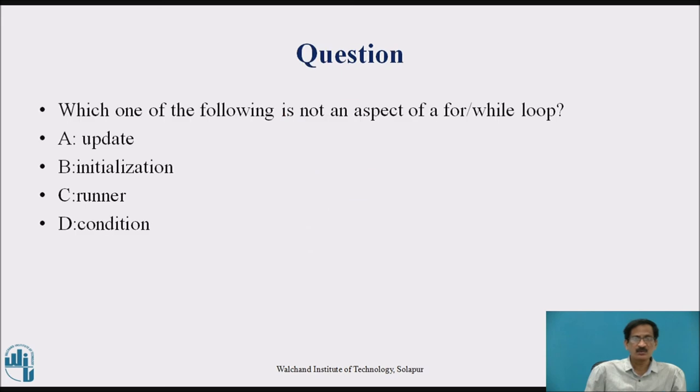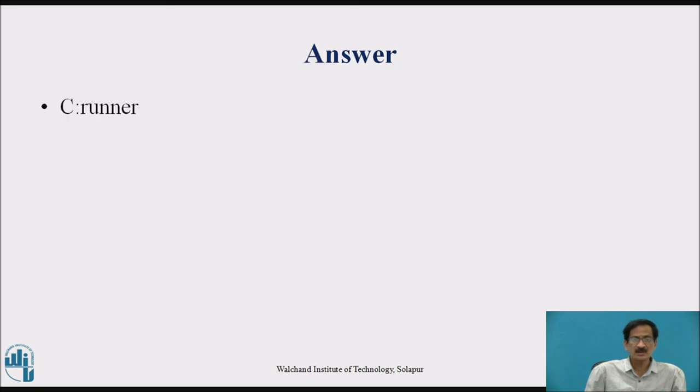Question: which one of the following is not an aspect of for or while loop? A: update, B: initialization, C: runner, D: condition. Answer is runner.